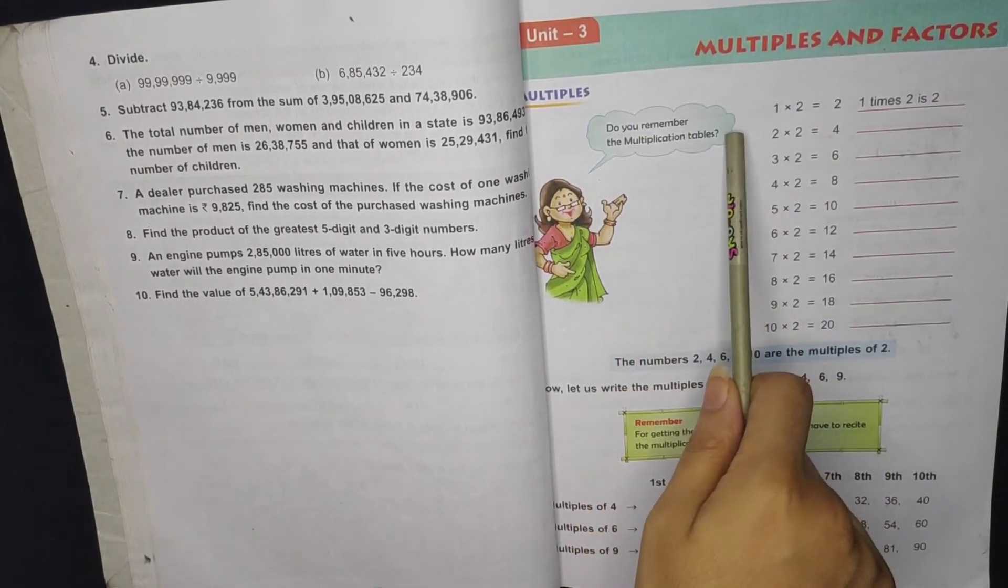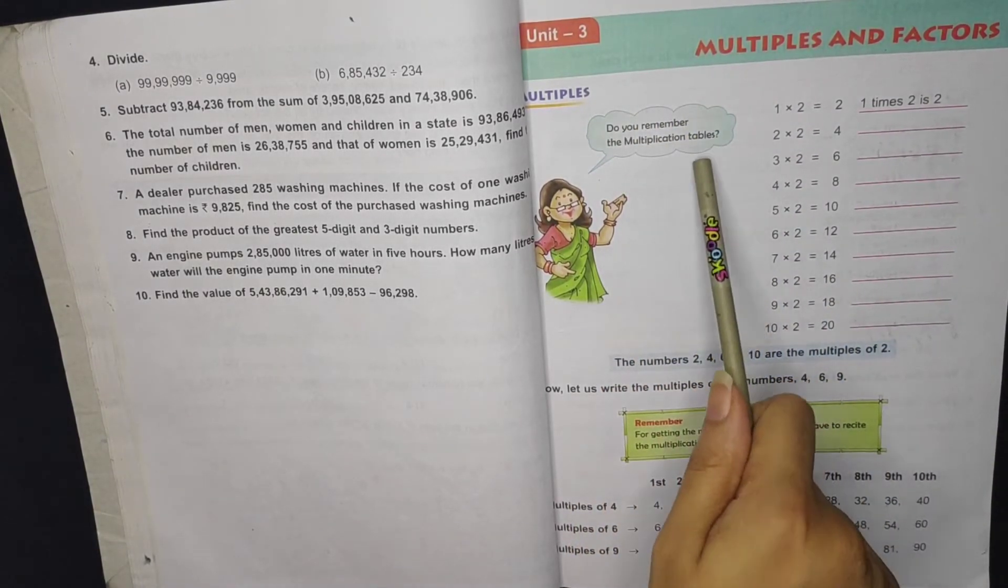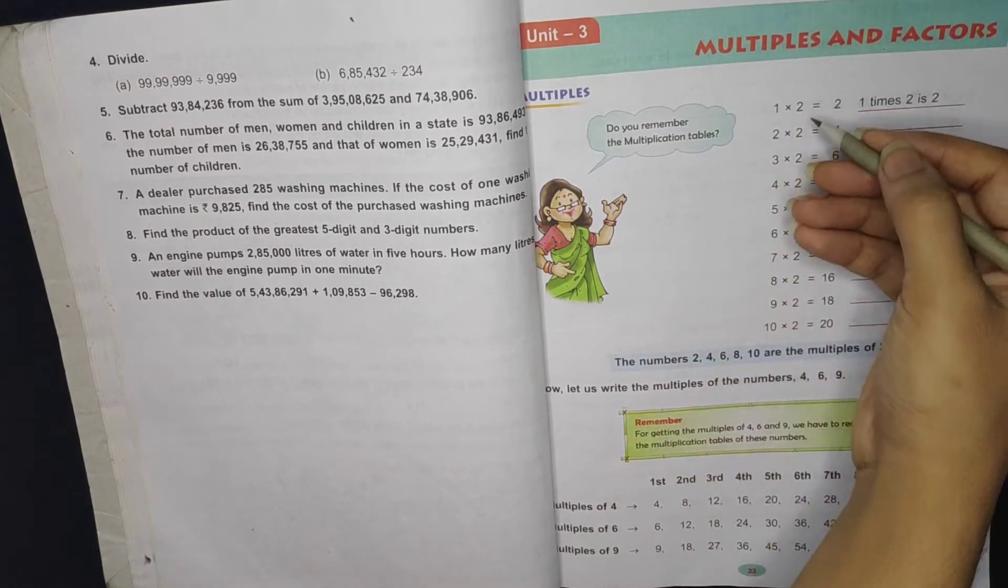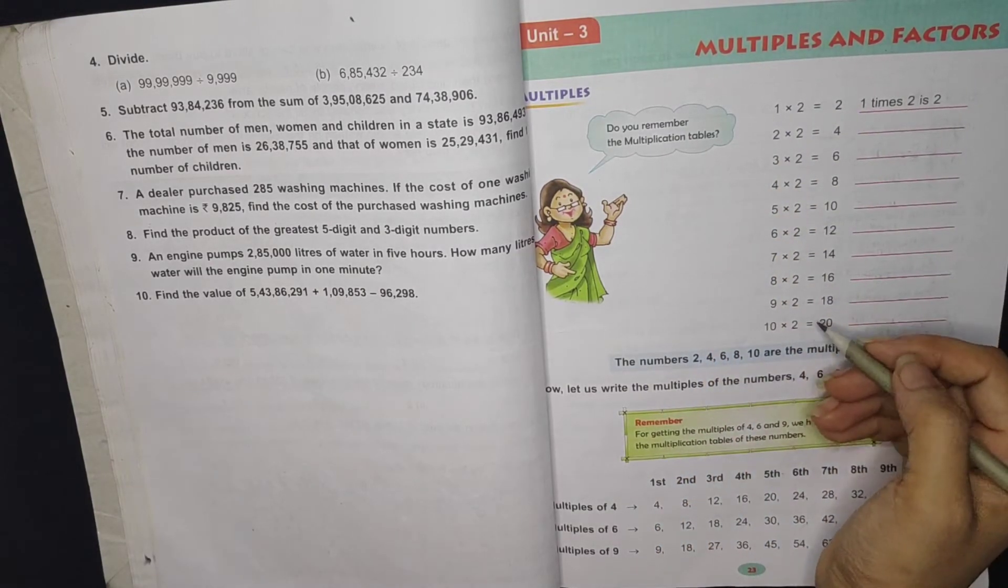First we are going to discuss multiples. What are multiples? For example, what is given here? A table is given. How do you read it?